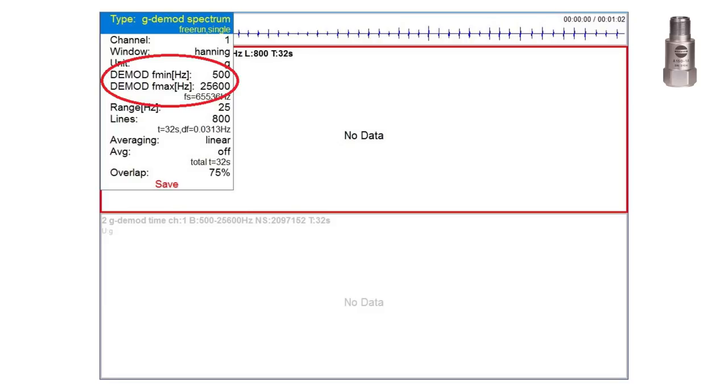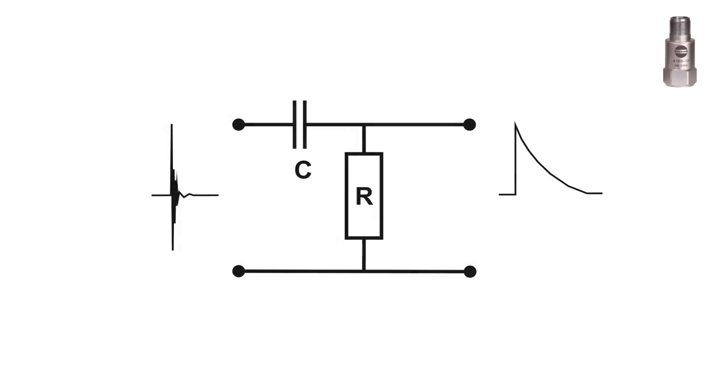You can imagine the enveloping like simple electrical circuit. The shock comes and charges the capacitor C. Then the capacitor is discharged through the resistor R. The discharging is much longer than the length of original shock. This is the additional energy which helps us in spectrum.